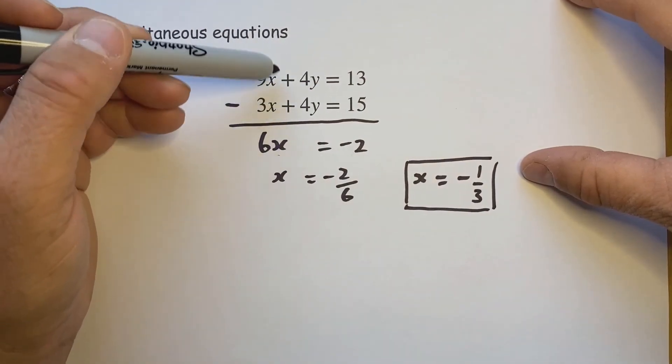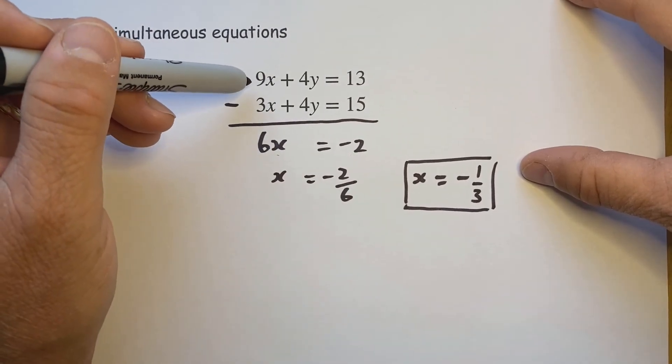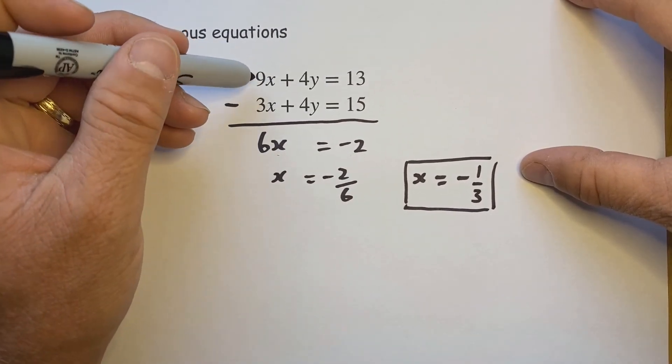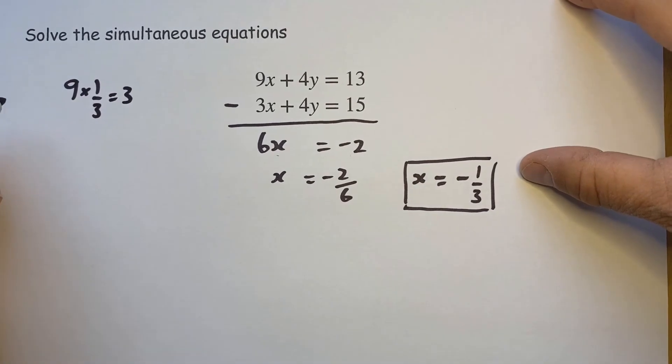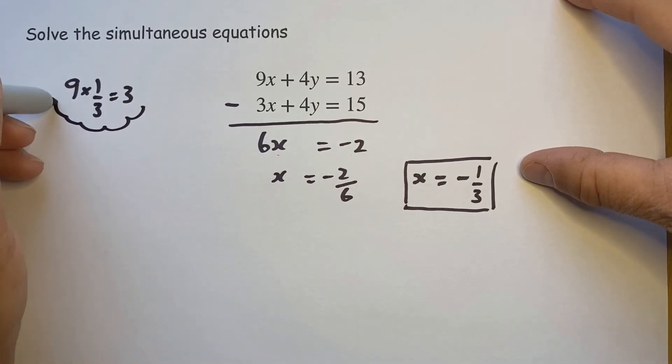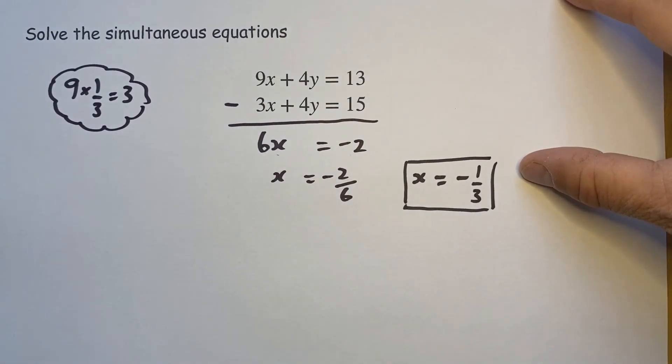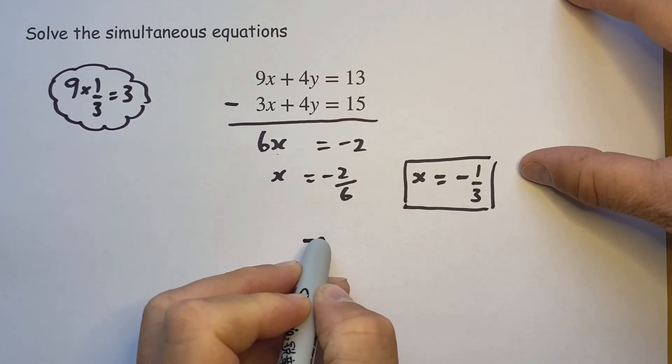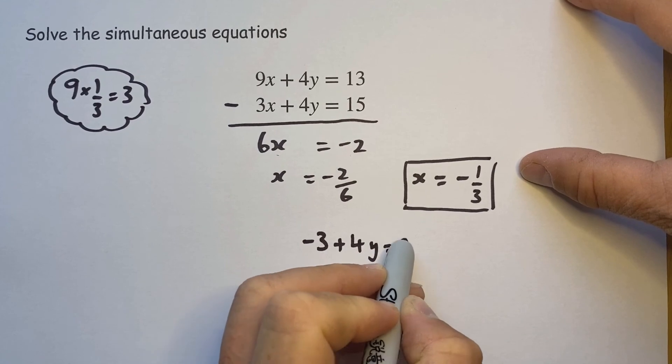Now we put that into either of these two, it doesn't matter which one you're putting to, so put in the top one for a change. Now 9 times minus a third, well 9 times a third is 3, so 9 times minus a third would be minus 3. Right, it's just me showing you how we work out that 9x. So we've got minus 3 add 4y equals 13.